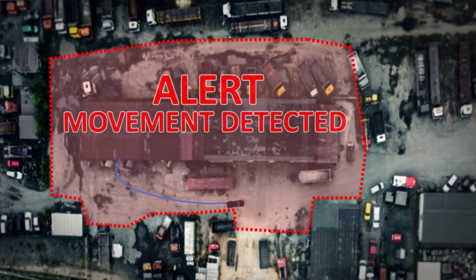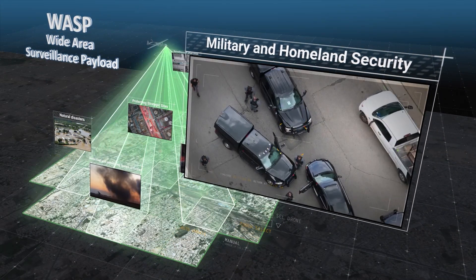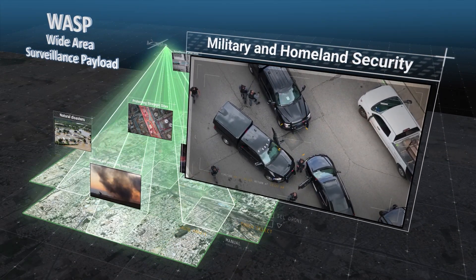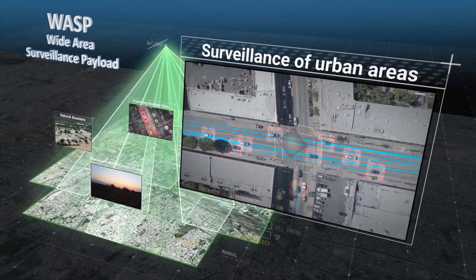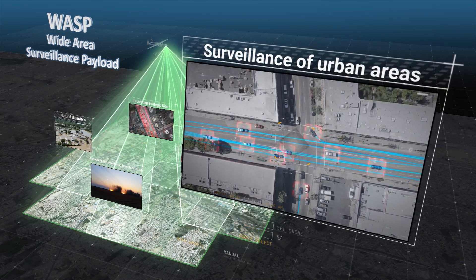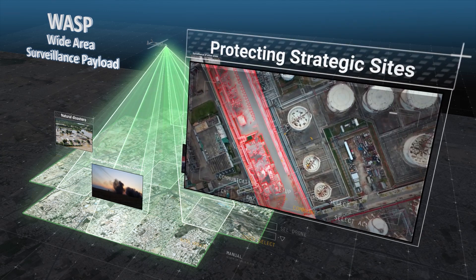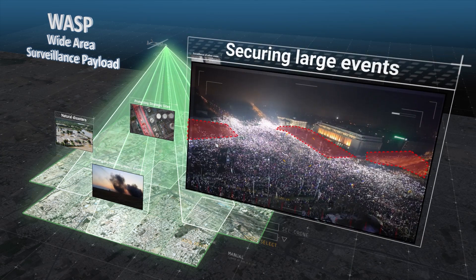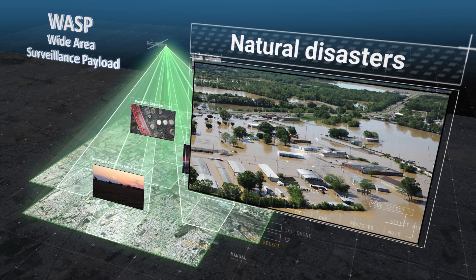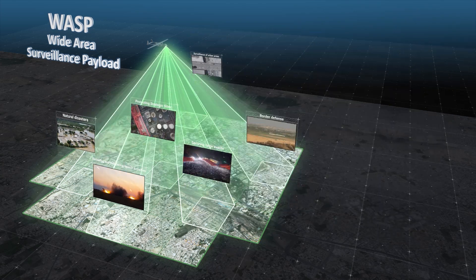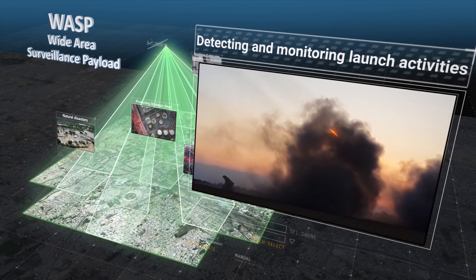The WASP system has many uses for both military and homeland security: surveillance of urban areas for police or military usage, border defense, protection of strategic sites, securing large events, control and coverage of natural disasters, and detecting and monitoring launch activities before and after the launch.